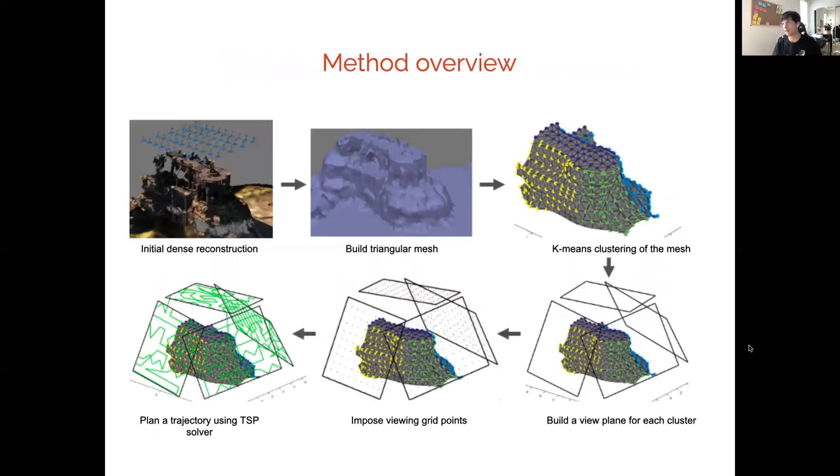We generalize those three ideas to our methods. First, we have an initial dense reconstruction from existing top-down zigzag trajectory. Those point clouds have been translated into triangular meshes to represent surface. Then using those surfaces, we can do k-means clustering on the mesh, where the clustering means surfaces that represent relatively similar planes. For each of the relatively similar planes, we can build a viewing plane that has equal distance to those regions, then impose a viewing grid of points as potential viewing selection. Using those potential points on each of the planes, we can plan an efficient trajectory that links all those points, which guarantees high quality reconstruction for the resulting scene.